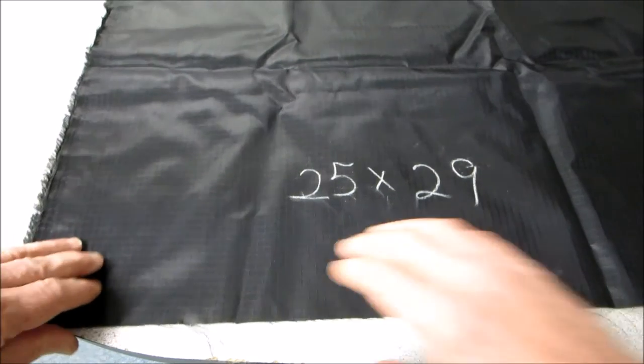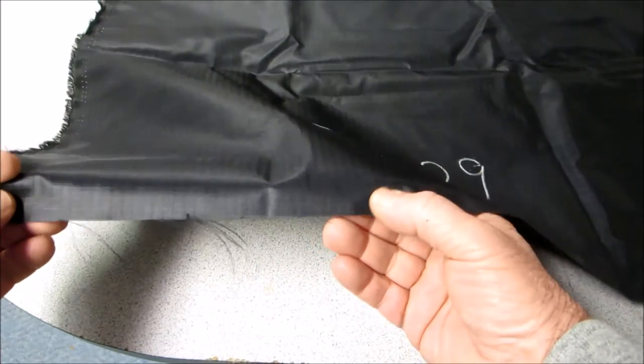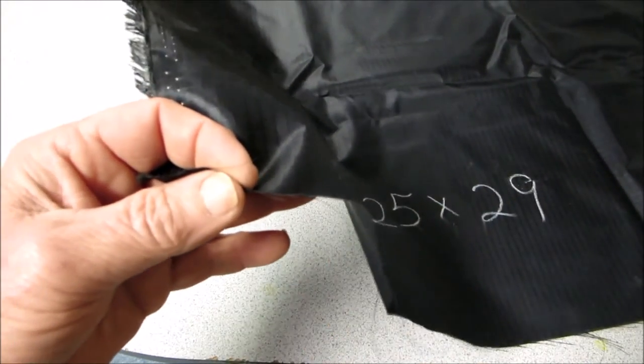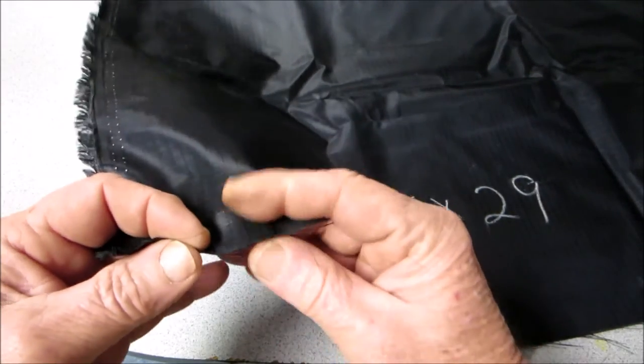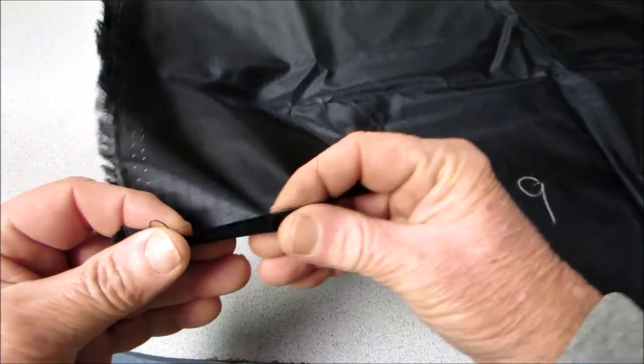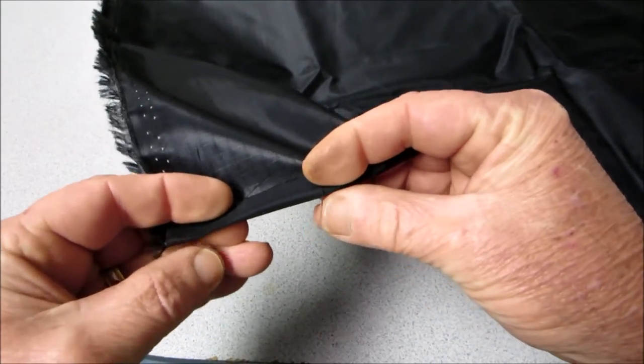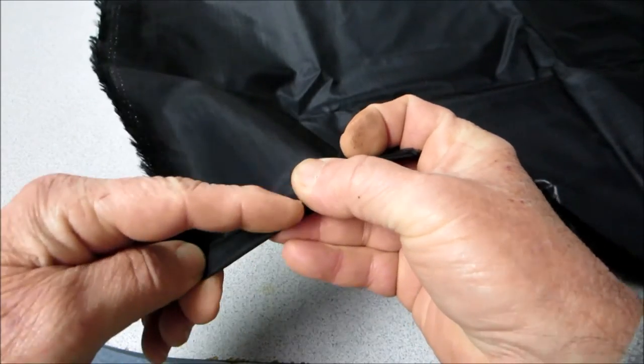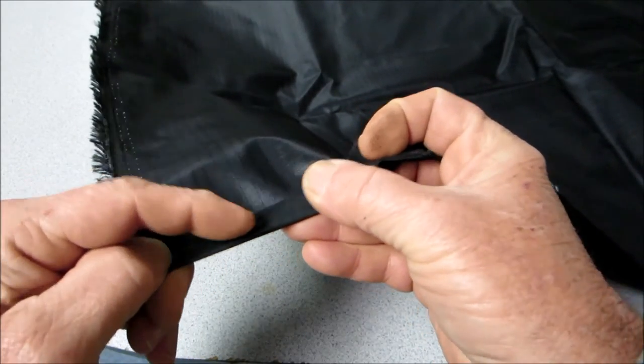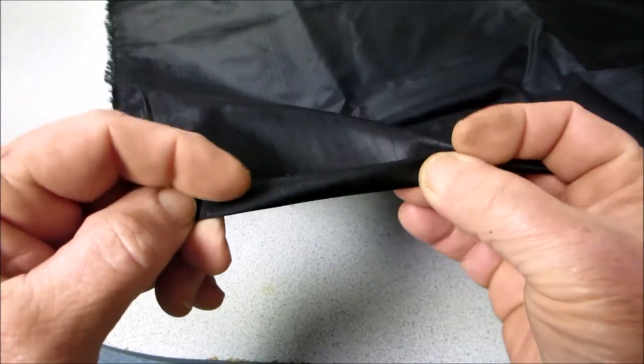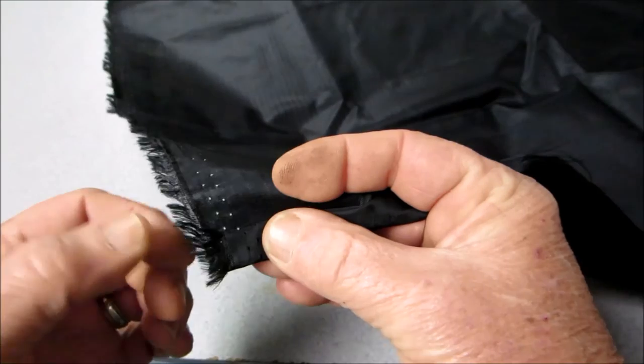The next thing we'll want to do, since this ripstop will fray around the edges, is put what they call a rolled hem around the entire perimeter. And a rolled hem is nothing more than taking the material, folding it once, folding it twice, and then put a seam or a hem around the entire perimeter. And that, again, that's just to keep the edges from fraying like that.